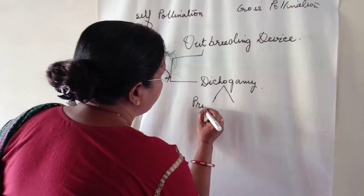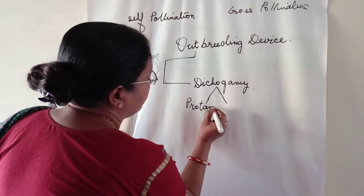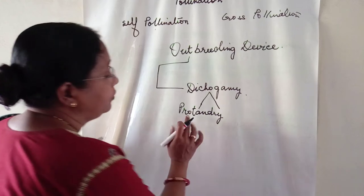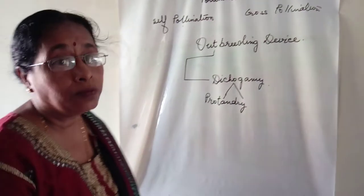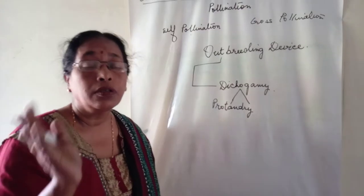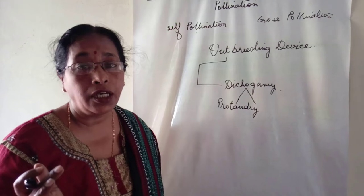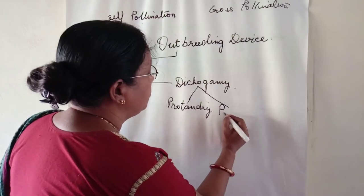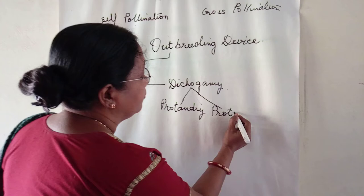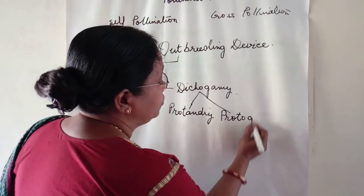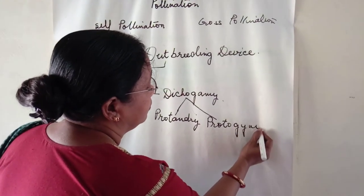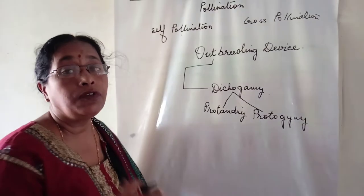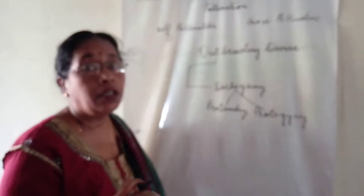The first type is protandry, which means the androecium matures earlier than the gynoecium. The second type is protogyny, which means the gynoecium matures earlier than the androecium.